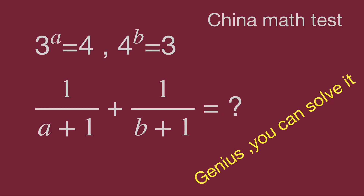You are watching Barahibo Math Genius Readers. The questions come from a China math test: given 3 power a equals 4 and 4 power b equals 3, find the value of 1 over (a plus 1) plus 1 over (b plus 1). In this video we share two methods to get the result.